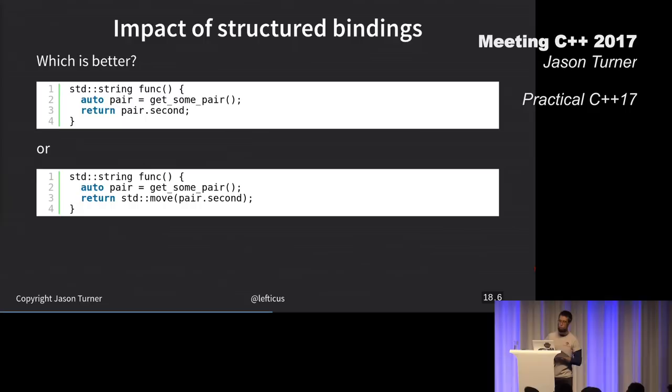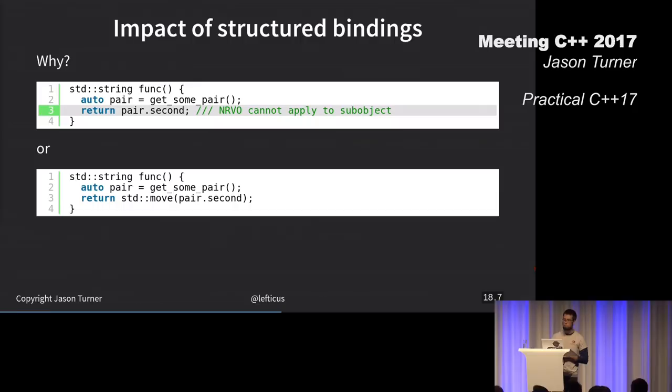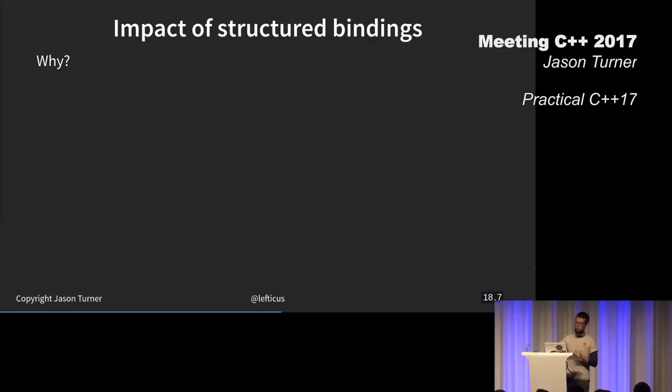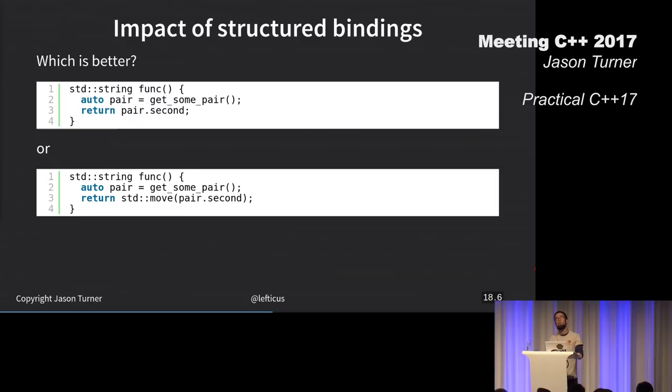RVO can't work because we're returning a sub-object, effectively. Why wouldn't you write just std move pair, then close the bracket and then write dot second? It's safer that we just pair and then write dot second. Calling move on the thing and then do dot second. That's a good point. But I'm building to something here.